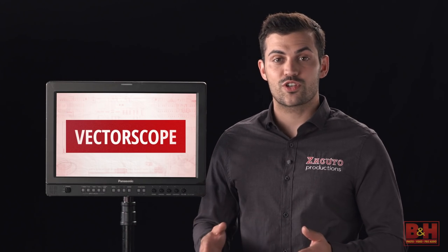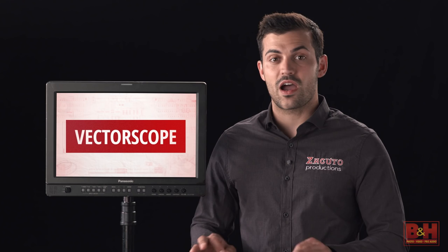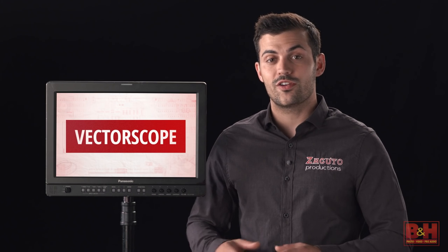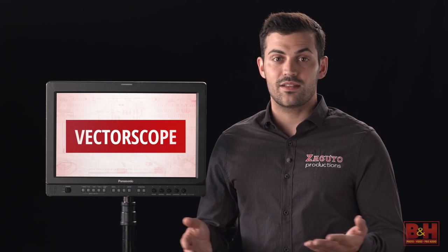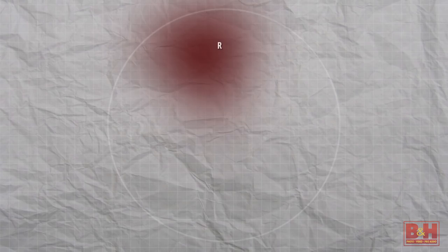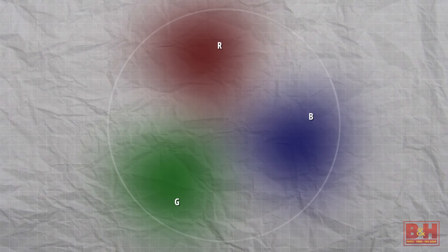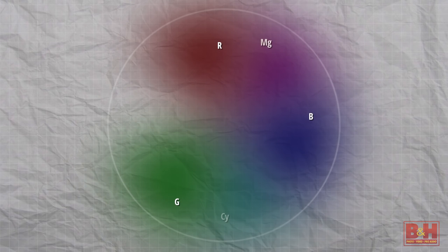It's laid out like a color wheel. We have red, blue, green, magenta, cyan, and yellow. The distance from the center of the circle represents a color's intensity.